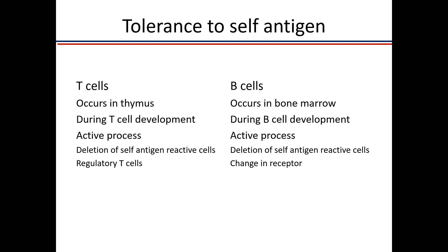In B cells, which develop in the bone marrow, the body similarly tries to remove all cells reactive against self-antigens — there is deletion. The other mechanism by which the immune response is modulated is that the B cell changes its receptor. These are the two mechanisms in B cells, analogous to those in T cells.